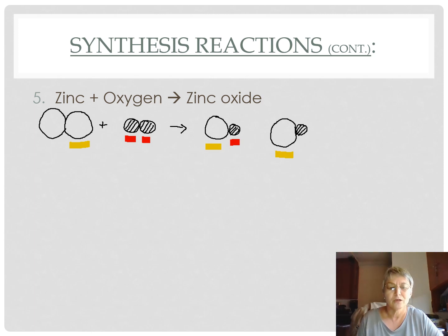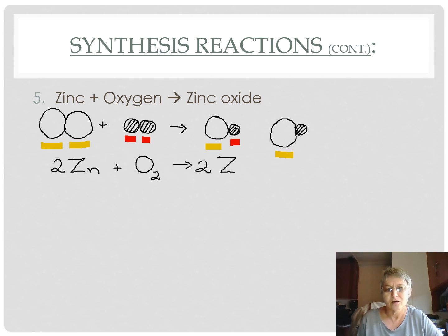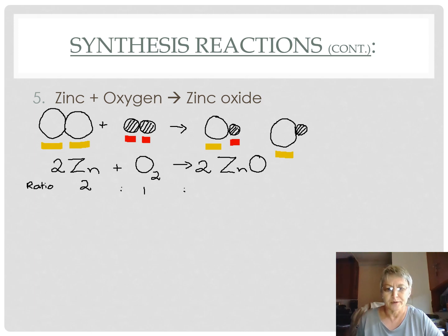...these atoms cling together, so we represent the second zinc atom linked to the first. You are welcome to write it free from the first one, but I will be happy with that as long as you know it's not a diatomic molecule. In terms of symbols, we have two zinc atoms reacting with one oxygen molecule to form two zinc oxide molecules. The ratio between the reactants is two to one, and the products is two.